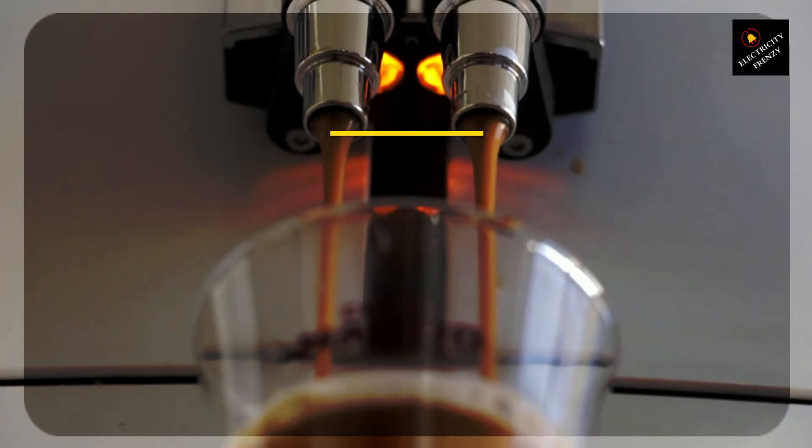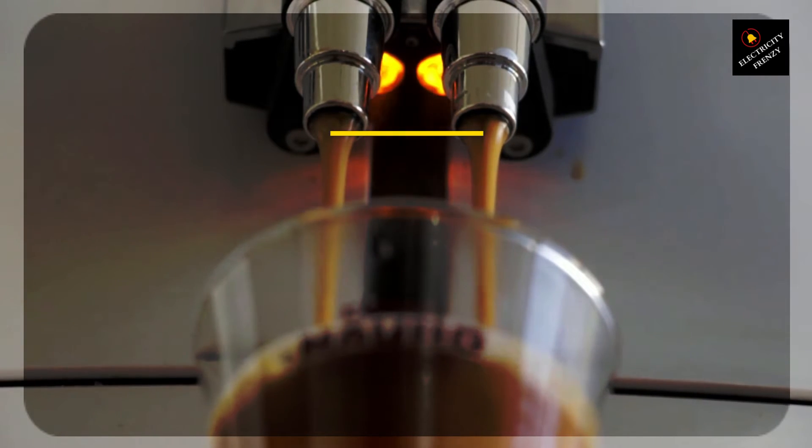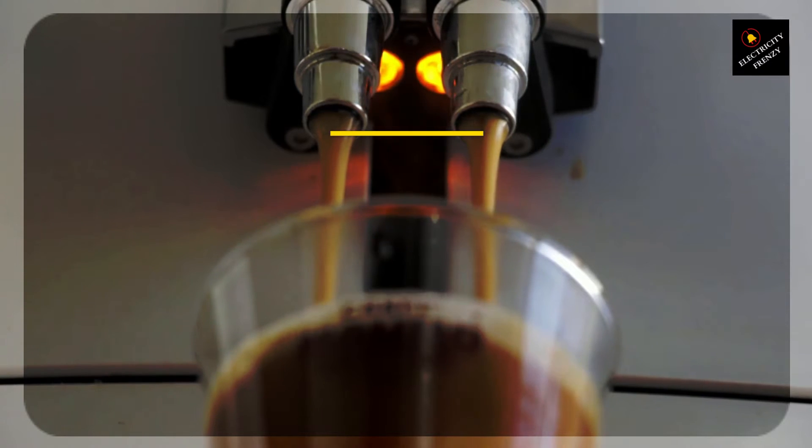Dimming or flickering lights. This classic sign is most noticeable when you've got multiple lights on at the same time, creating an ambience more suited to a horror movie than a cozy evening.